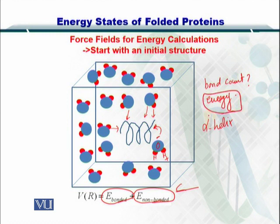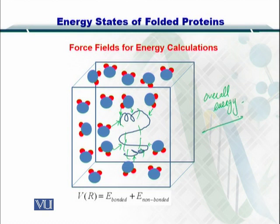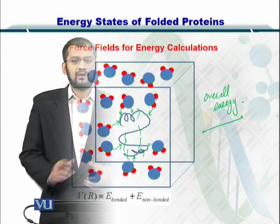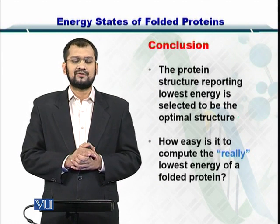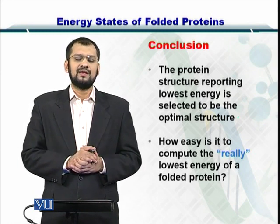Once you have computed the energy, you want to change the protein structure to see the difference in energy given out by a different conformation. So here it was an alpha helix and now it has been replaced by two alpha helices and two beta sheets. Again, you compute how many bonds are made with the atoms in the protein and compute the overall energy. In this way, once you have computed the energy of all possible predicted protein structures, you sort them by energy content and the one with the lowest energy is the correct prediction.